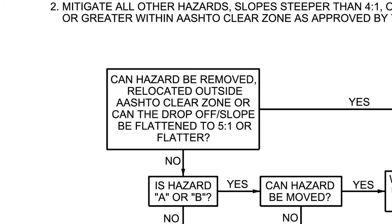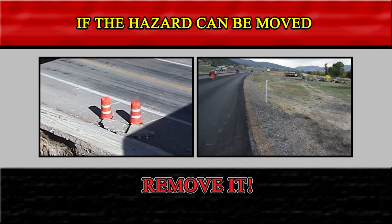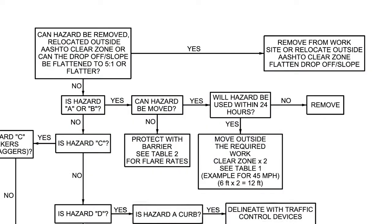The first question is: can the hazard be removed or relocated outside the astral clear zone? Or can the drop-off be flattened to 5 to 1 or flatter? Before you spend too much time determining the type of hazard, we want to know if it can be moved outside the astral clear zone. Bottom line — if the hazard can be moved, remove it.